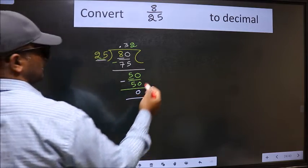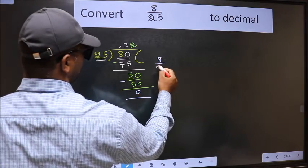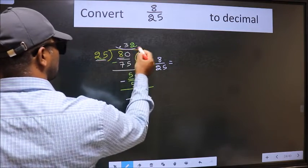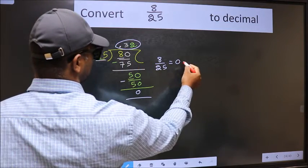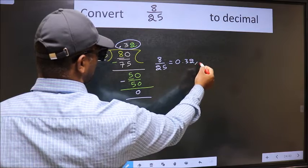Therefore, our decimal of 8 by 25 is this one. 0.32 is our answer.